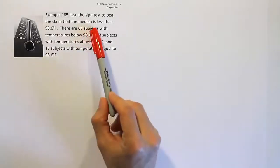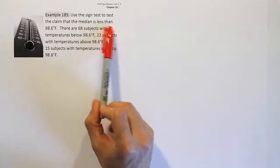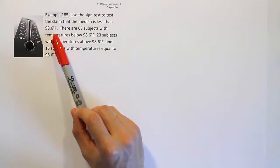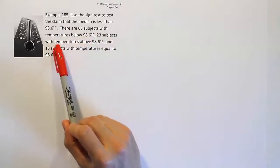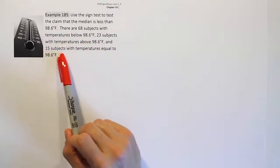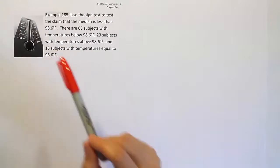Example 185. Use the sign test to test the claim that the median is less than 98.6 degrees Fahrenheit. There are 68 subjects with temperatures below 98.6, 22 subjects with temperatures above 98.6, and 15 subjects with temperatures equal to 98.6.